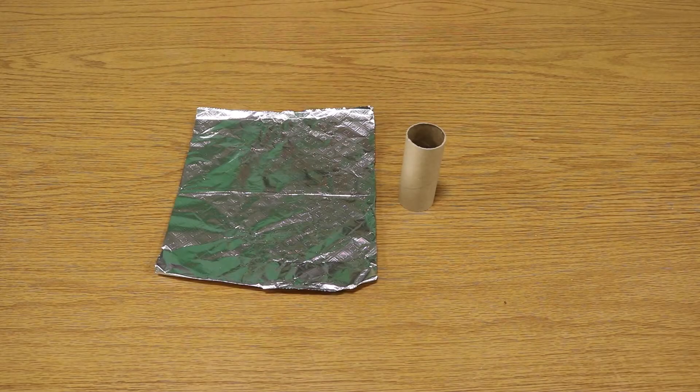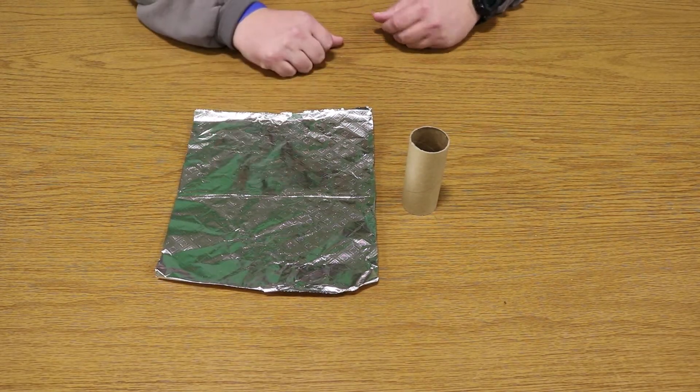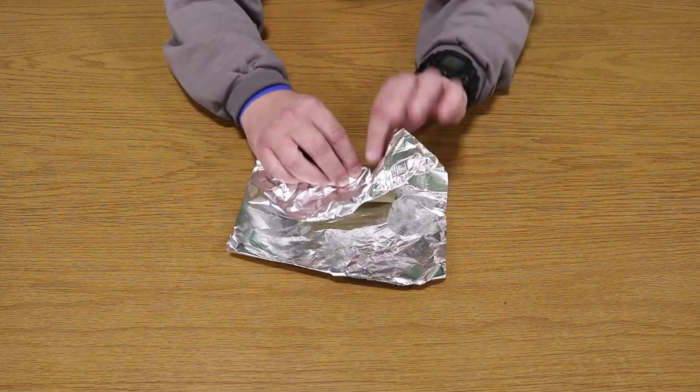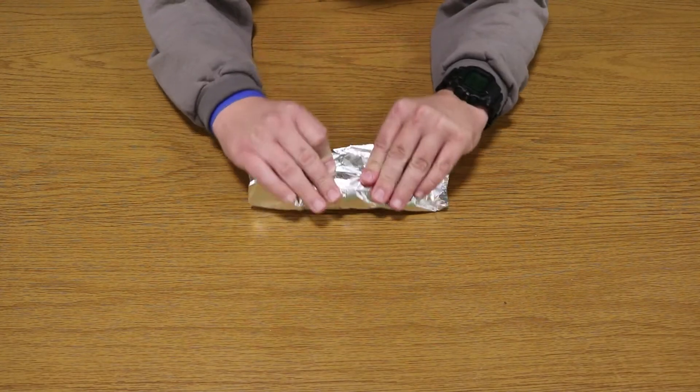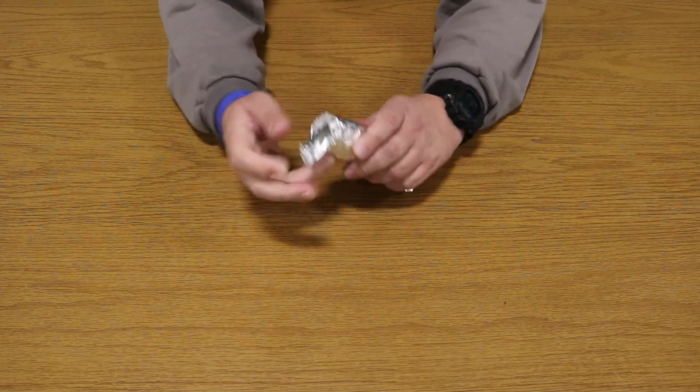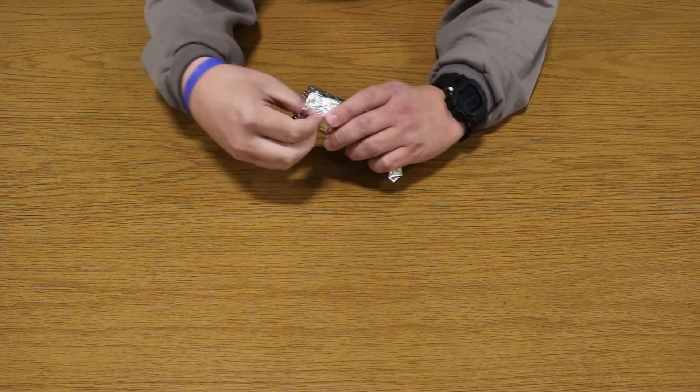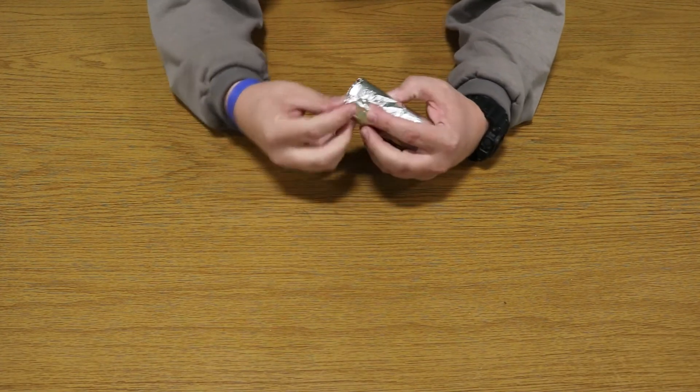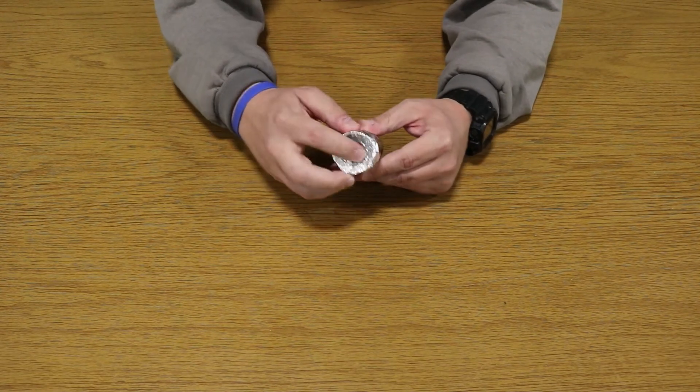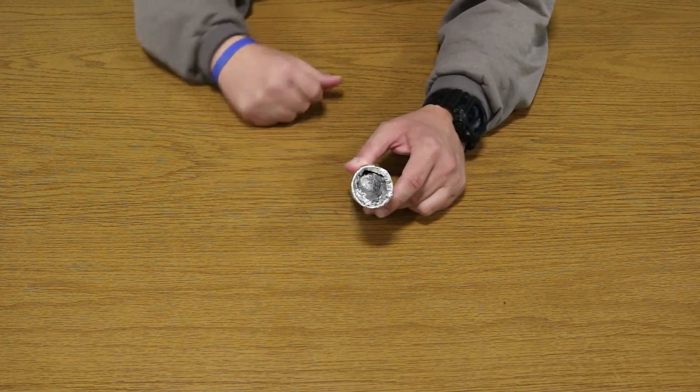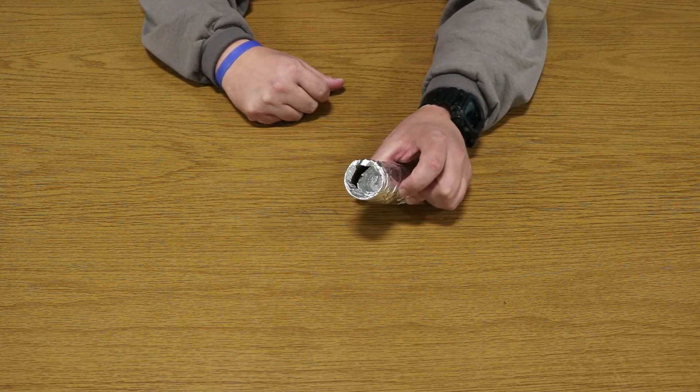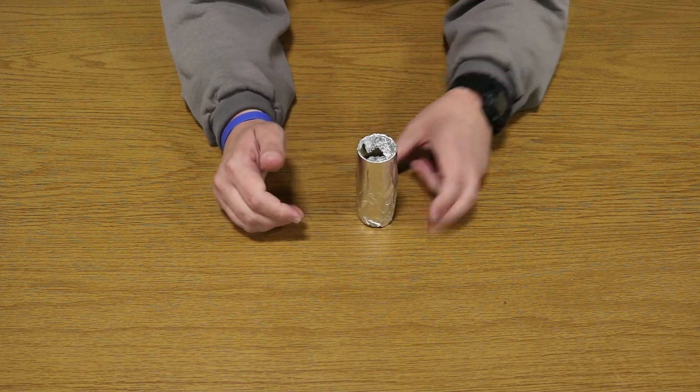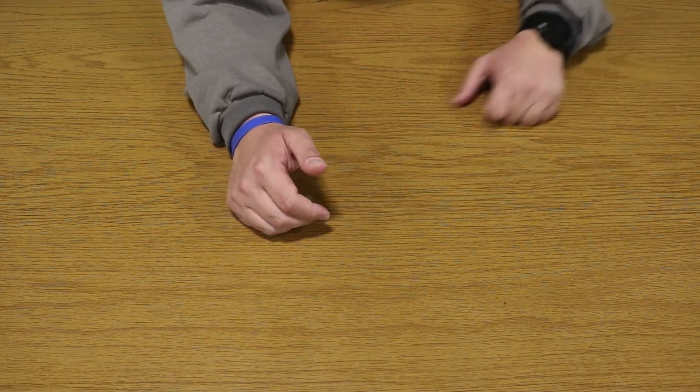First step, take your craft tube and your sheet of foil and we're just going to wrap our craft tube in the foil. Just wrap it up and you're going to stuff the excess inside. Now you want to make sure you can leave one side plugged but kind of push the end so you have a little bit of room on the inside. There's our first step.